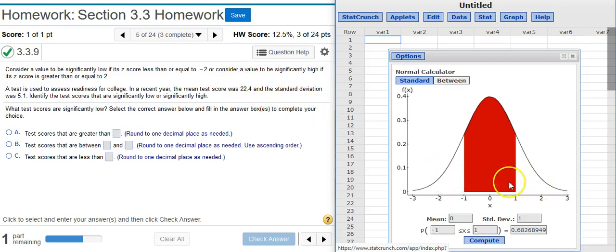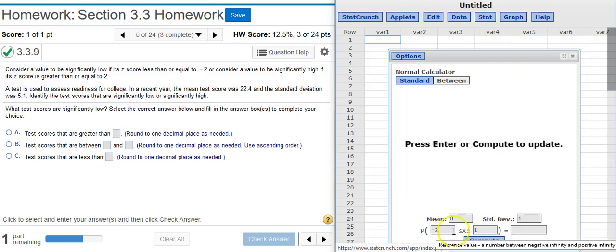The bounds for these tails, you can see here in the problem statement, anything less than negative 2 and anything more than positive 2 is going to be low or high, respectively. So I'm just going to put those values in here.